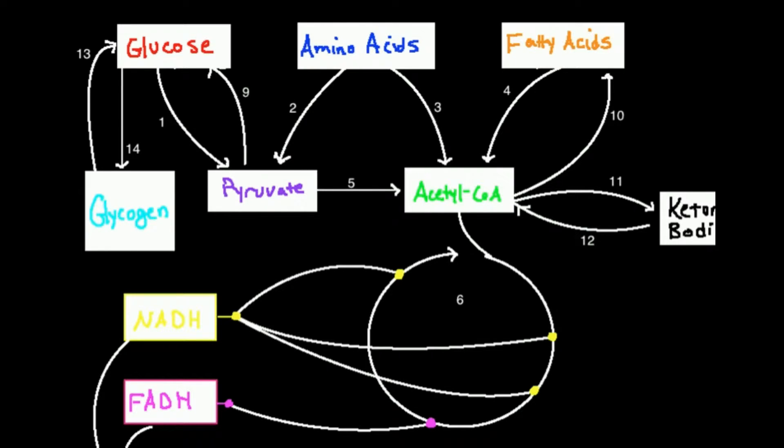Now, if I have glucose and I want to metabolize it, number one, this process right here, glycolysis. Glucose is going to go through glycolysis and ultimately become two molecules of pyruvate per one molecule of glucose.